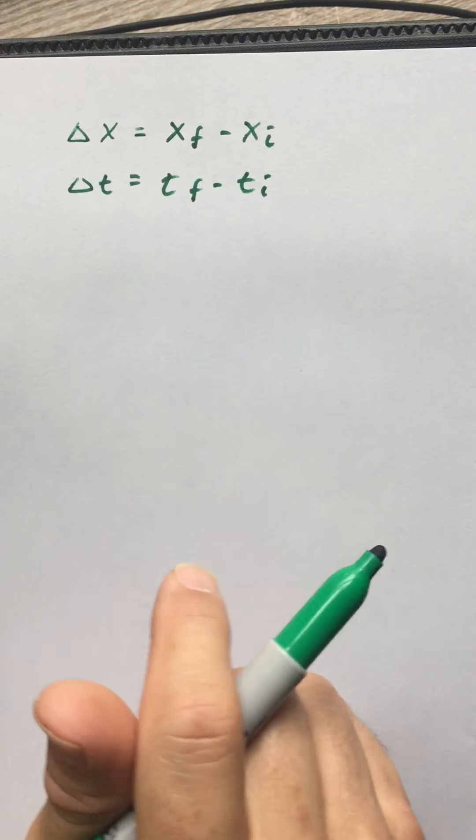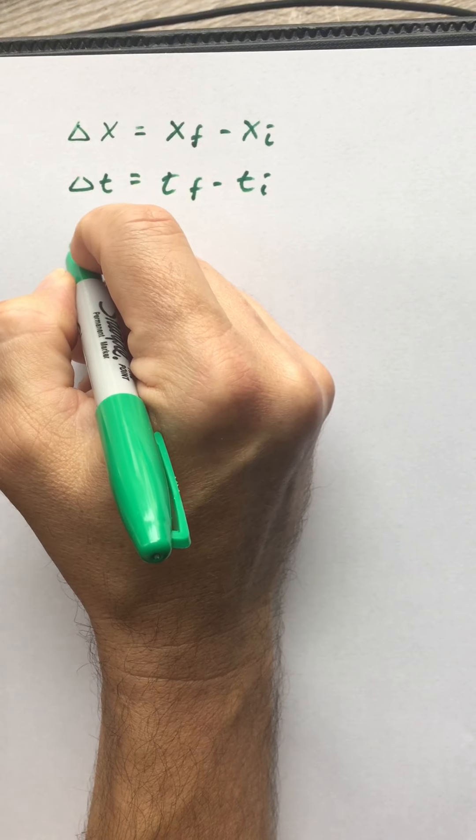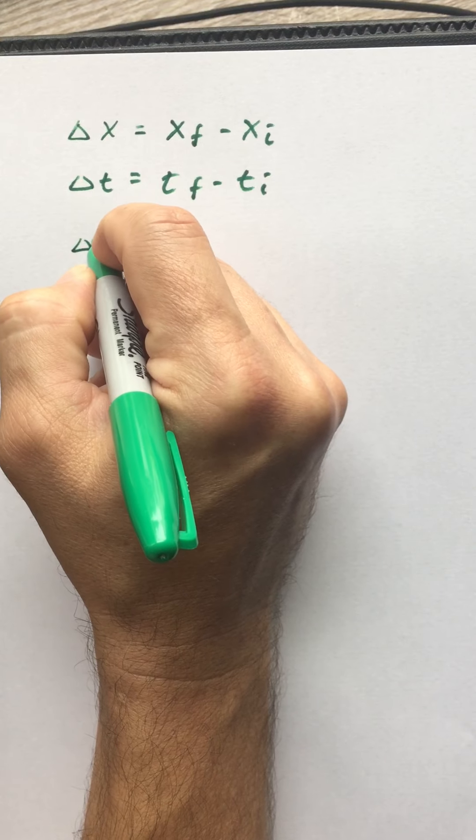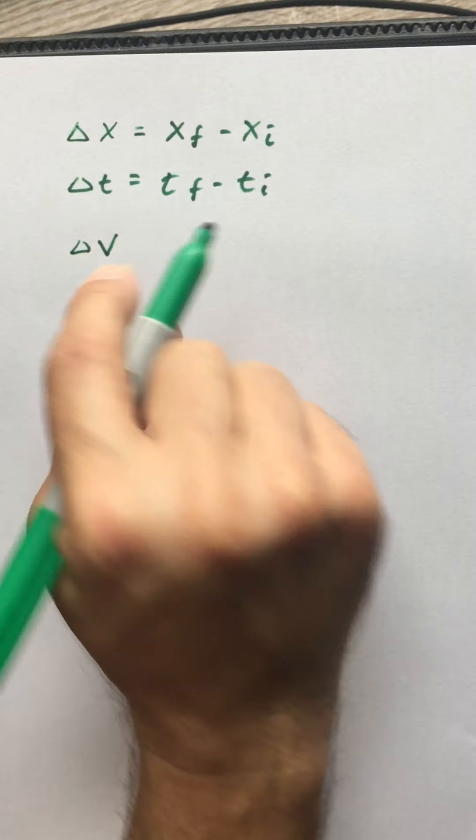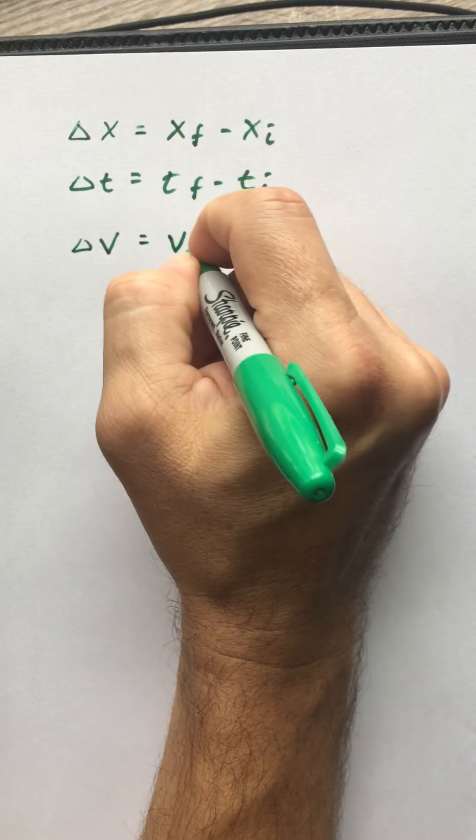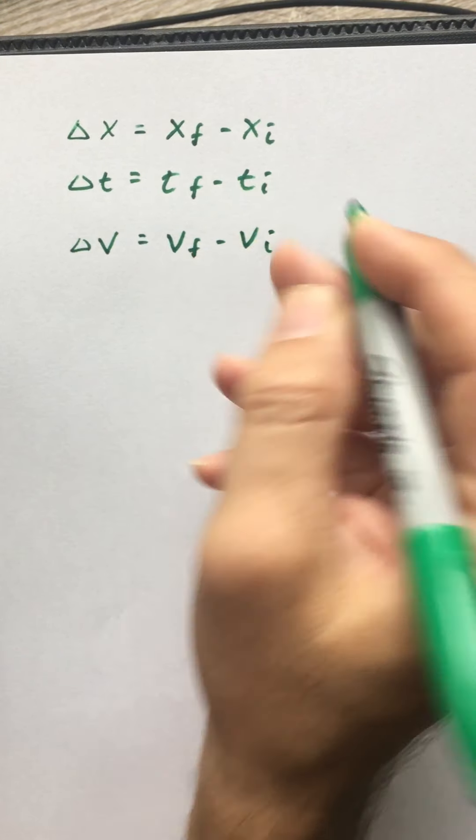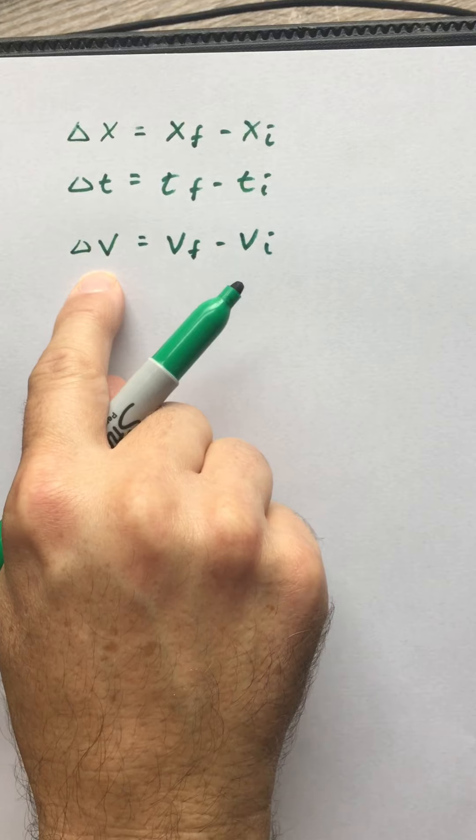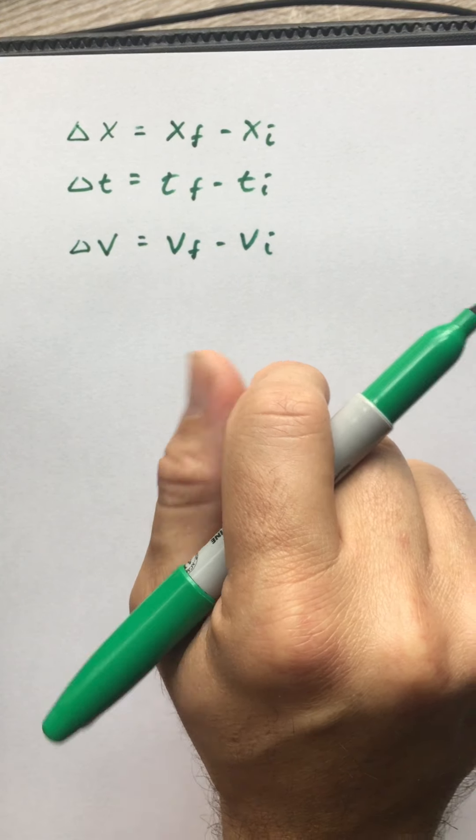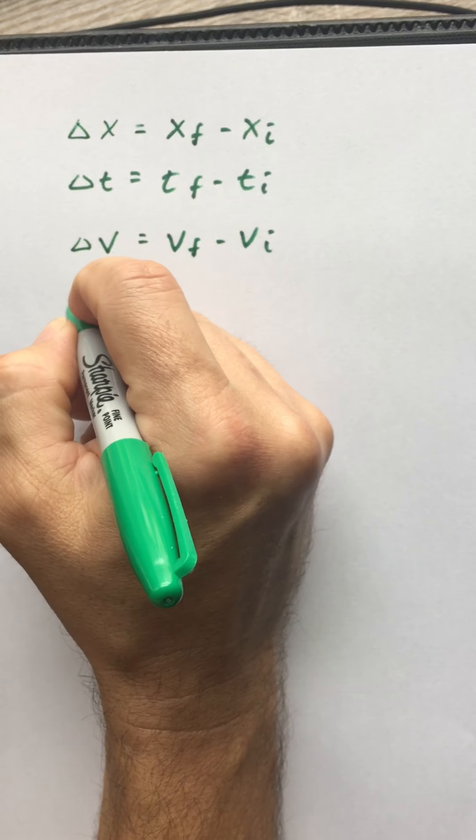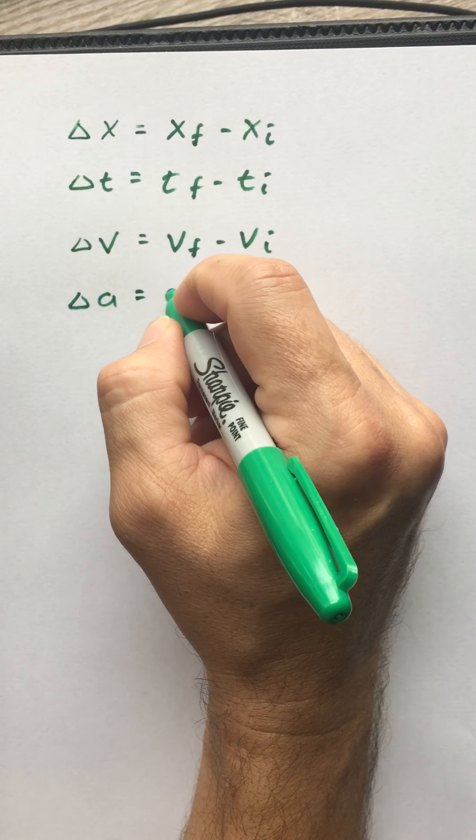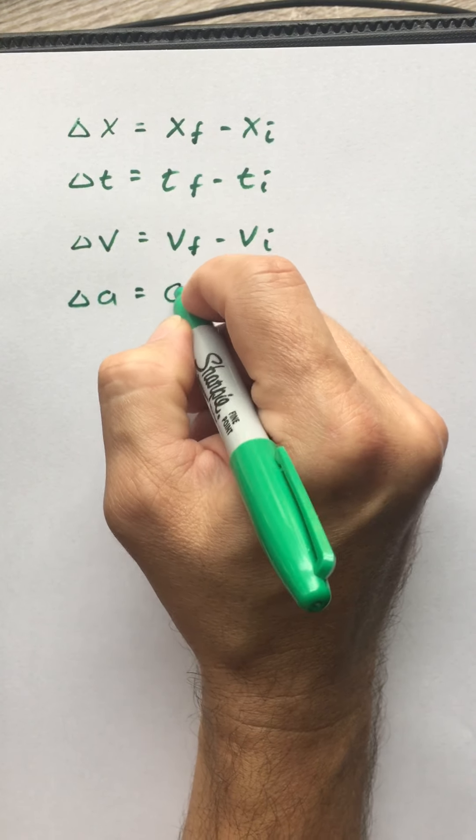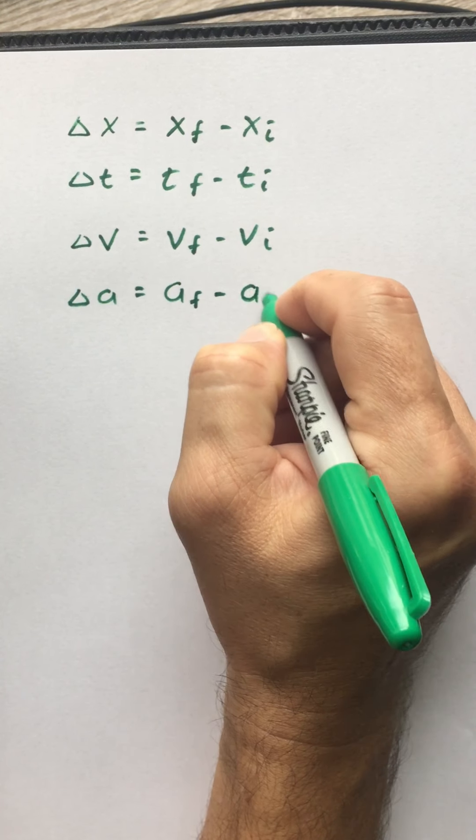Forming delta x over delta t led us to the idea of a velocity. But then we said that the velocity can also change and so I have the idea of a v final minus v initial. And doing this with regards to the time it takes to change it led us to the acceleration. And then we also said that the acceleration, of course, you can form a delta on anything. We can talk about af minus ai.